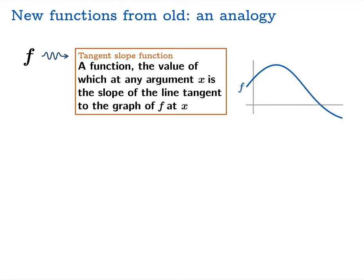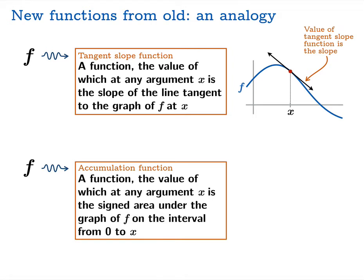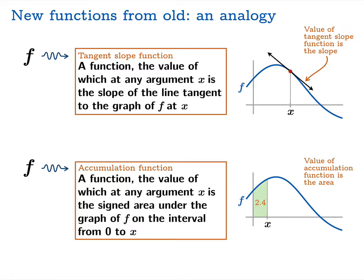It's much easier to imagine what's going on with a picture. The value of the tangent slope function at a particular x is just the tangent slope, and if you change x you get a different slope. You choose the x, and the value of the tangent slope function is the slope of the tangent on the graph of f. Here's our new function — it's going to be called an accumulation function. It's a function the value of which at any argument x is the signed area under the graph of f on the interval from 0 to x. You take your old function f, and for any particular value of x, the value of your new function is going to be the signed area on the interval from 0 to x. As you change x, you're going to get different values.